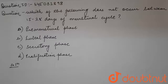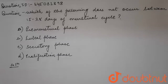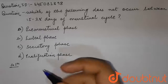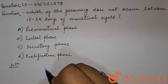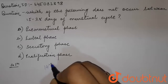The question is: which of the following does not occur between 15 to 28 days of the menstrual cycle? Options are: A) premenstrual, B) luteal phase, C) secretory phase, and D) proliferation phase. Let's talk about the menstrual cycle.